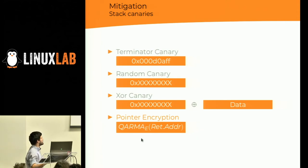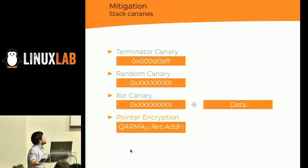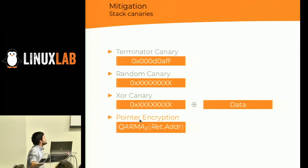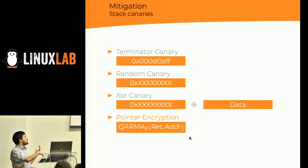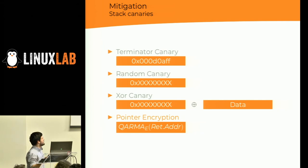Pointer encryption is another protection. In the new ARM v8.3 architecture, you have pointer authentication — your return address gets encrypted. The attacker needs to crack the return pointer to hijack control flow.